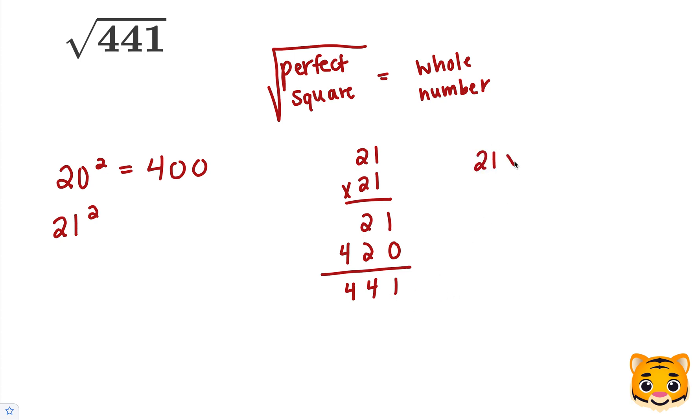This means that 21 times 21 or 21 squared is equal to 441. So then we can say the square root of 441 is equal to 21. We can now see that 441 is a perfect square because the square root of 441 is a whole number value.